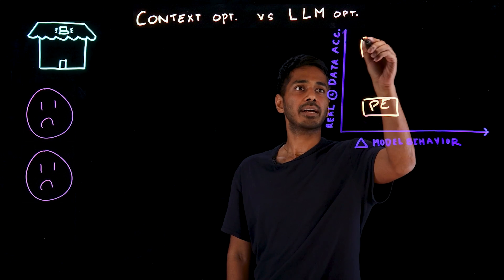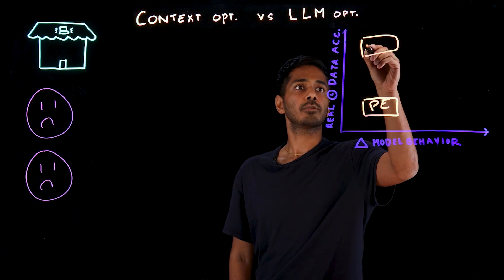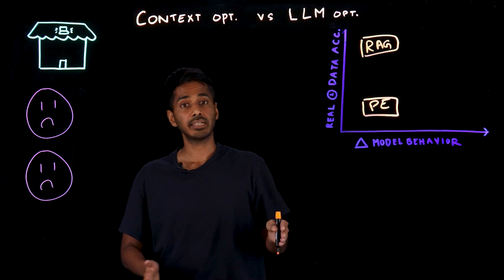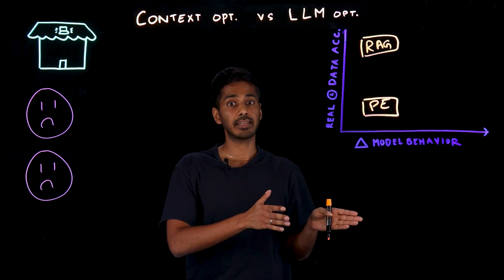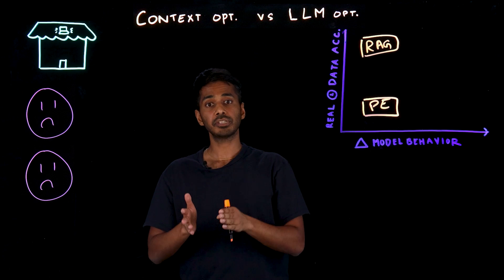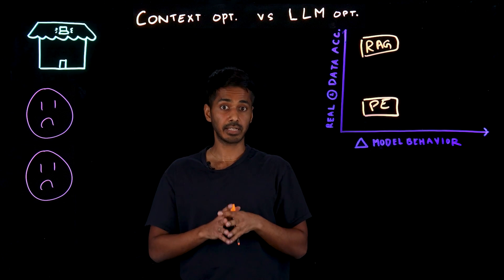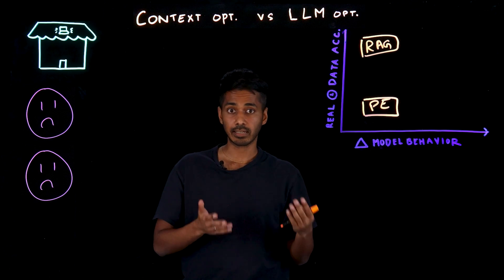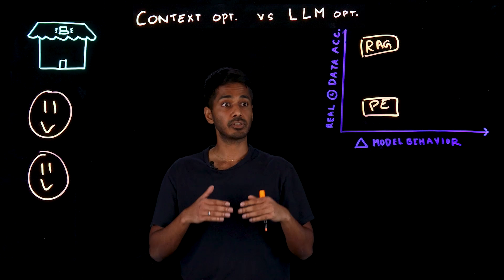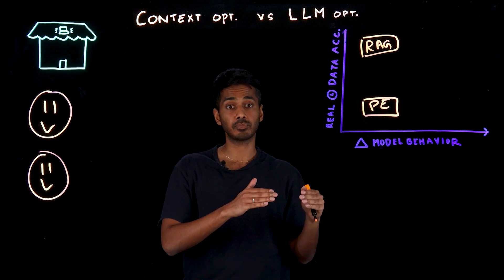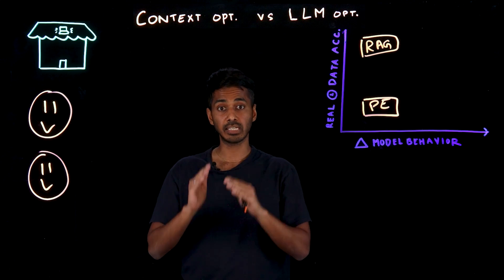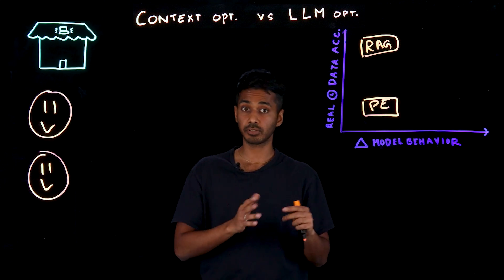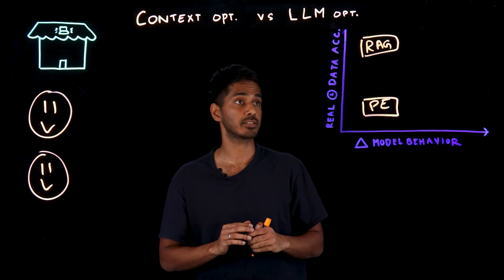That in a way is like RAG — Retrieval Augmented Generation — which allows you to connect this LLM to your data sources to make sure that you're getting the right answers. This can also address hallucination because you can specify in the prompt that the model needs to give the answer only from the specified documents. So it's a really powerful tool.